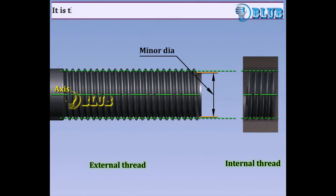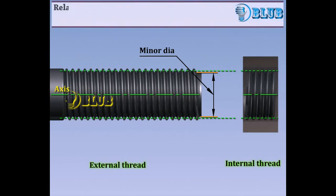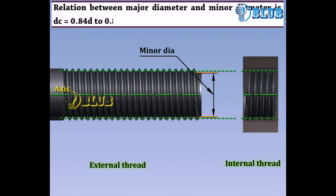Minor diameter, i.e. DC. It is the smallest diameter of an external or internal screw thread. Also known as core or root diameter. Relation between major diameter and minor diameter is DC is equal to 0.84D to 0.81D depending on fine or coarse thread.